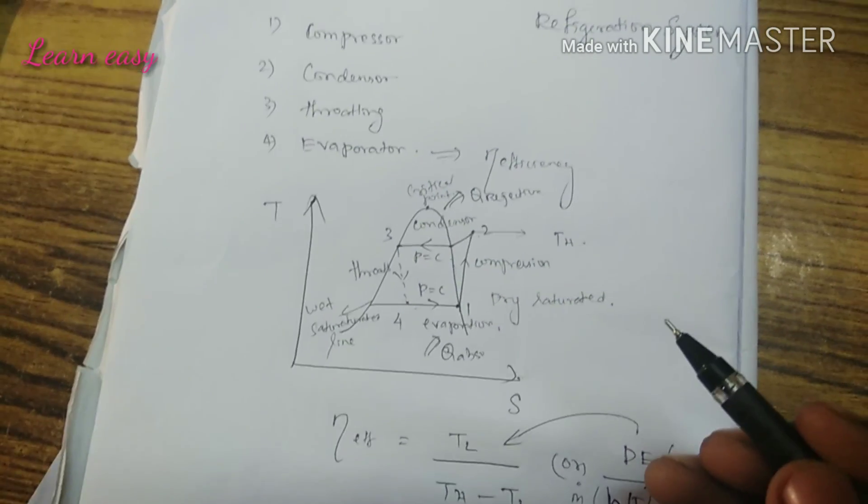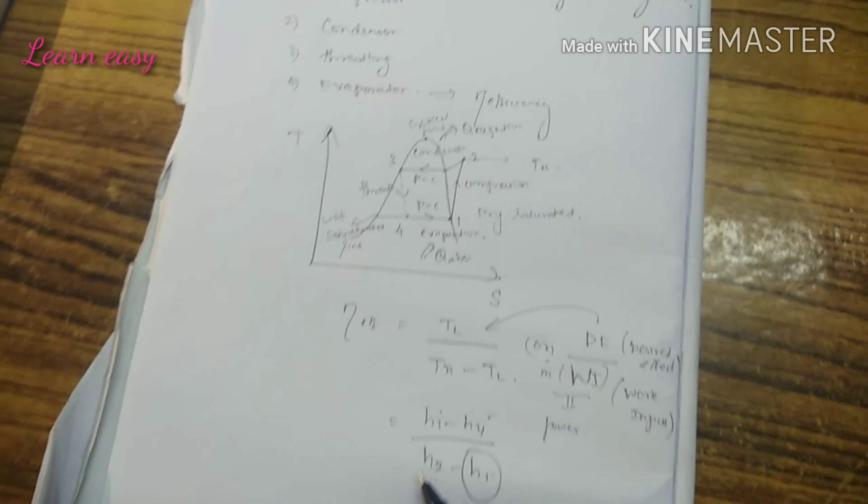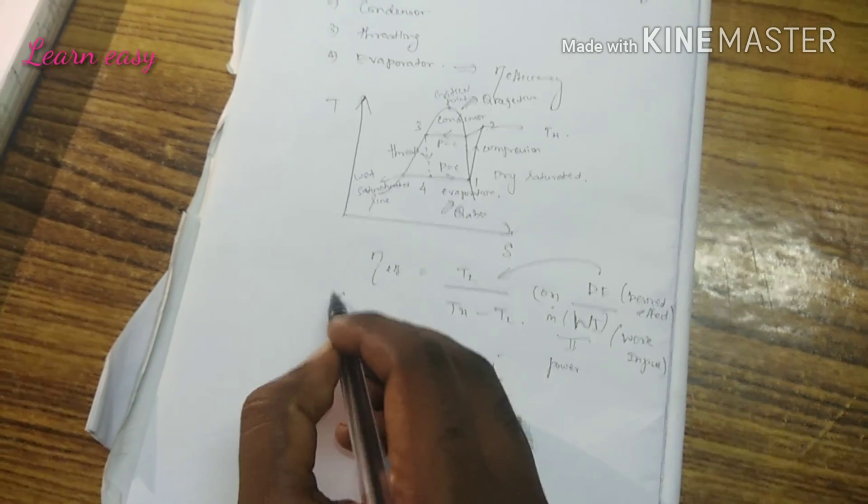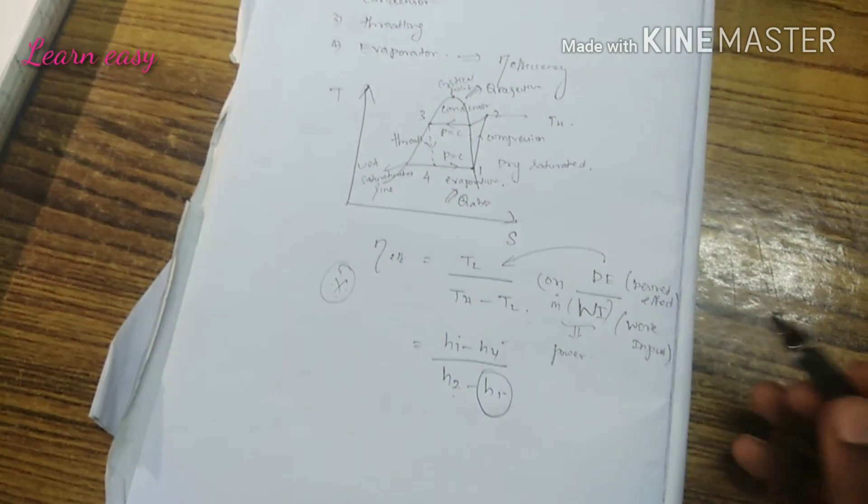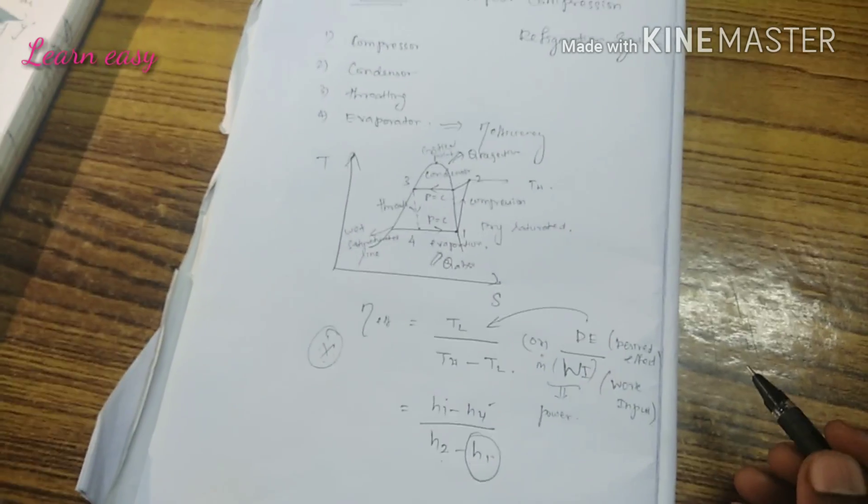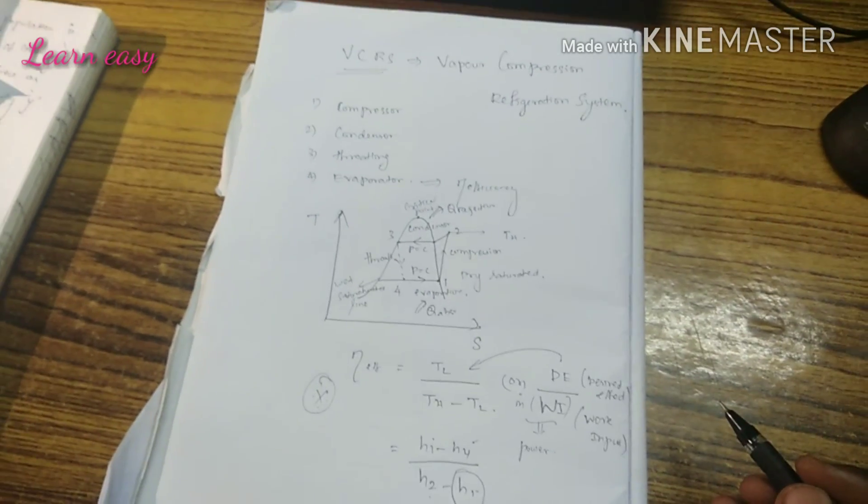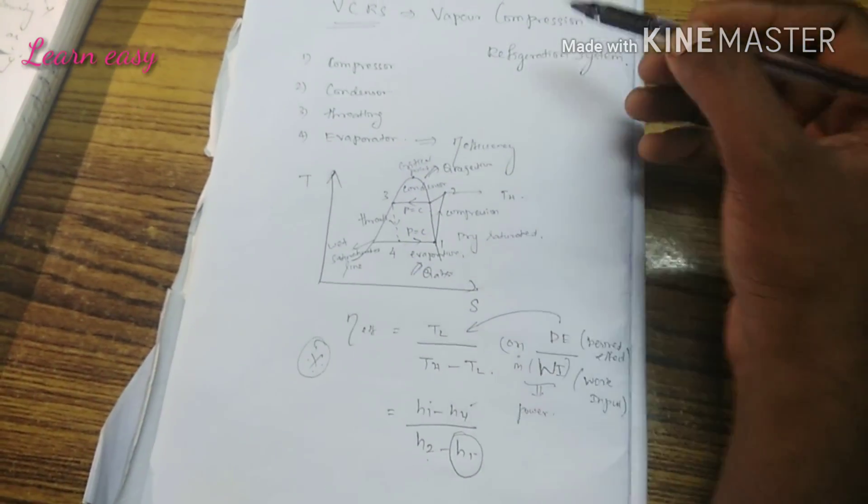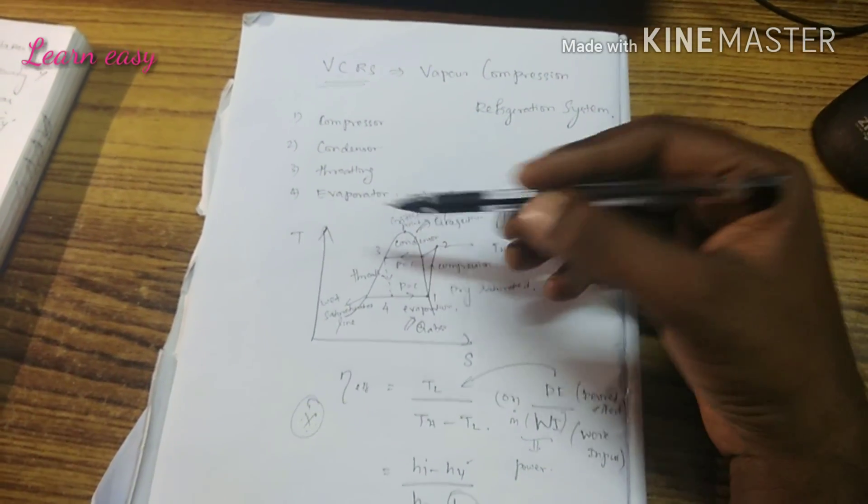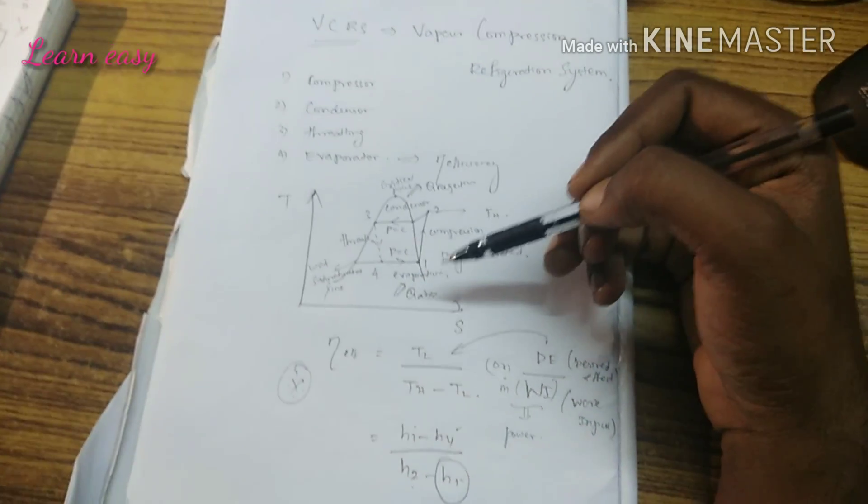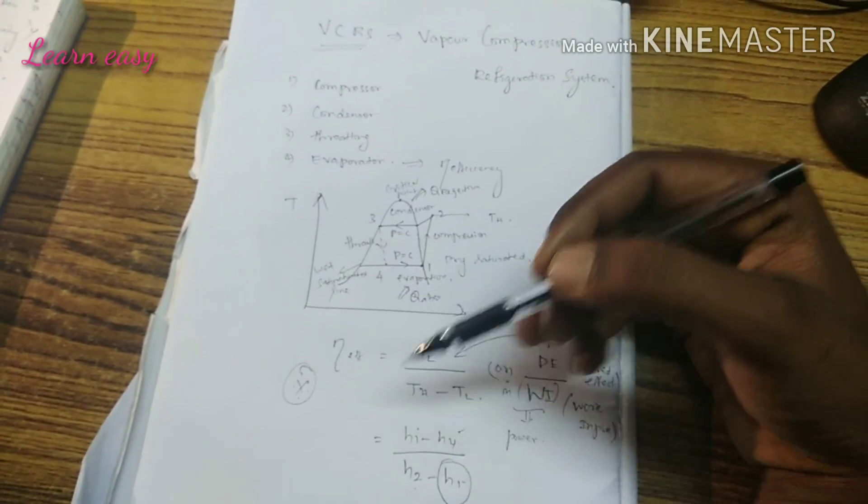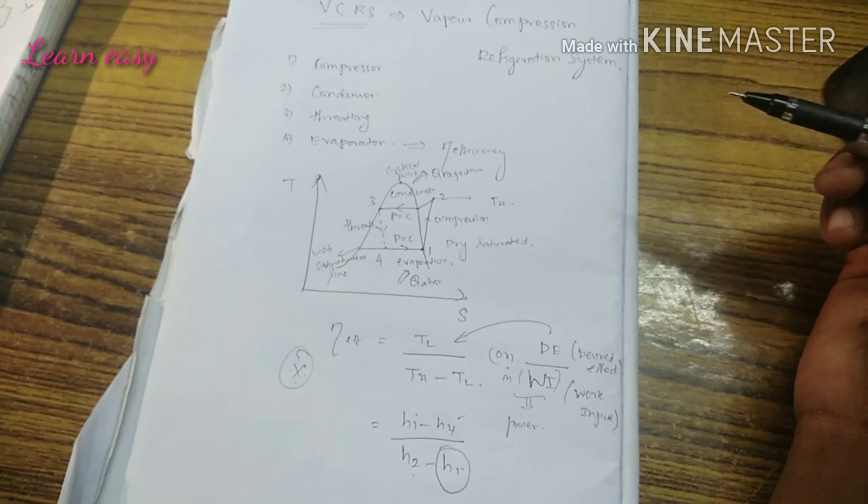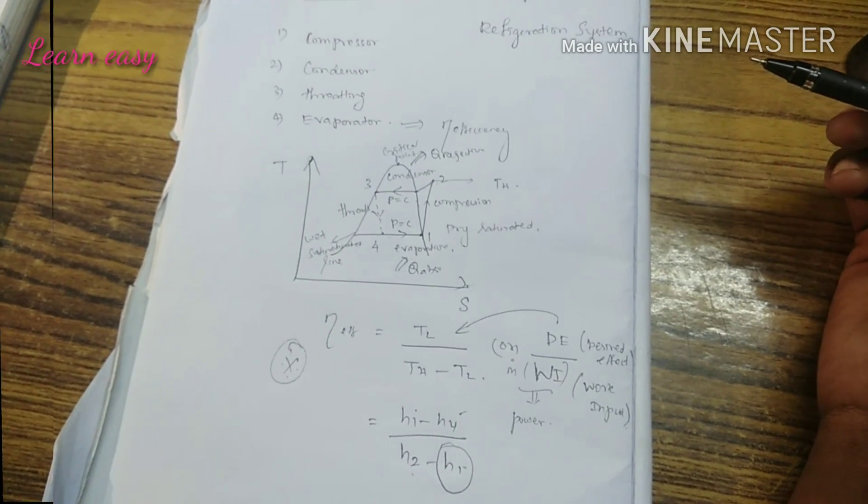This efficiency formula is very important. In every online test or GATE exam, basic questions about the vapor compression refrigeration cycle will involve the temperature-entropy cycle or this formula. That's all for today's section.